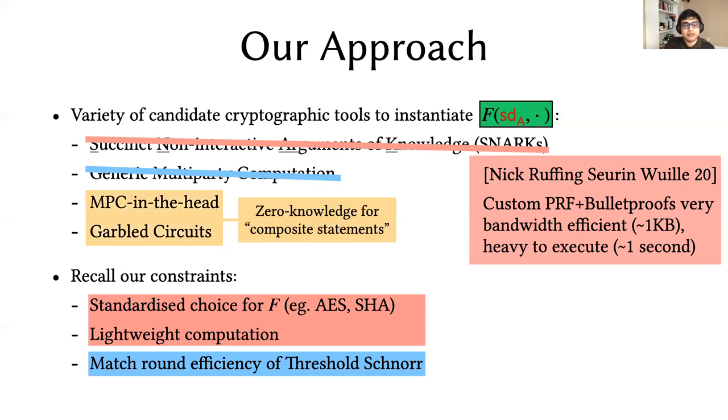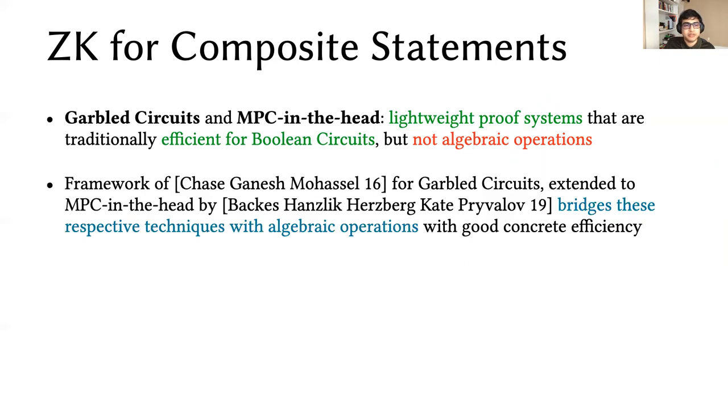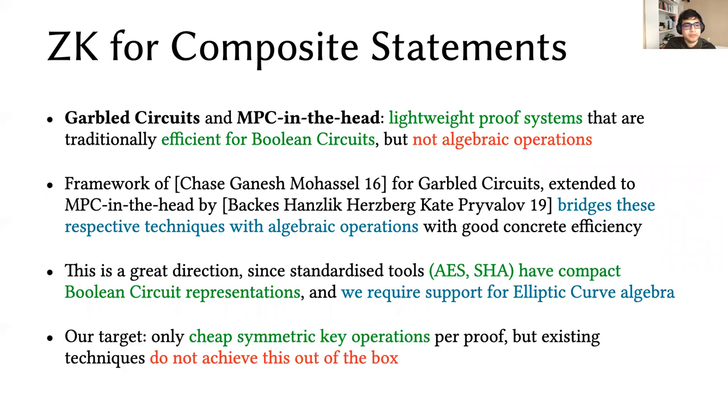We're left with MPC in the head and garbled circuits, for which there's an interesting direction in the work of zero knowledge for composite statements. Both of these tools are known to be efficient for Boolean circuits, but not for algebraic operations. But the bridge to algebraic operations has been investigated in works of Chase, Ganesh, Mohassel, and Baum, Szanzilik, Herzberg, Cartier, and Piveteau. This is a great direction, since AES and SHA have compact Boolean circuit representations, and we require such a bridge to elliptic curve algebra for Schnorr. However, our target is to achieve ideally only cheap symmetric key operations for proof, but existing techniques don't achieve this out of the box.